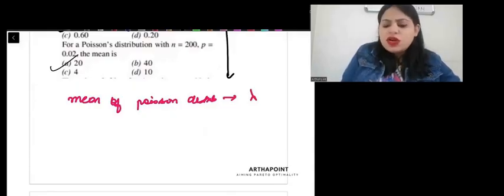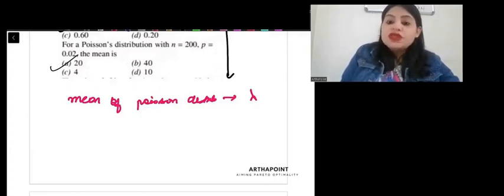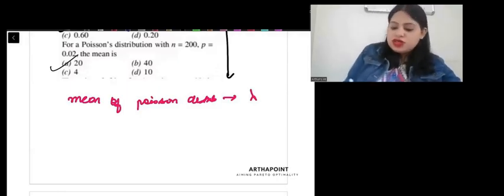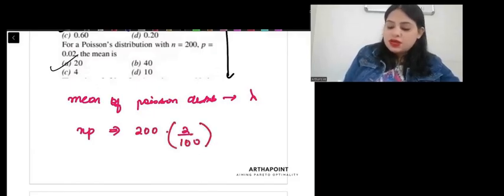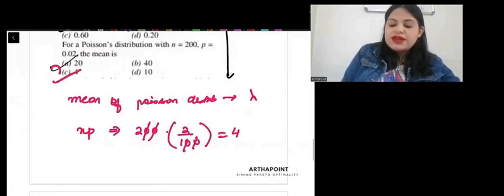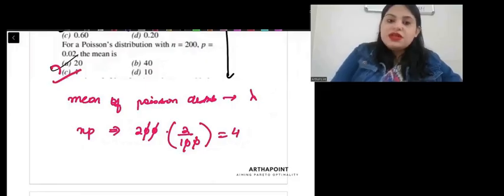But lambda is not given to us. Because lambda is not given to us, the only way in which I can find the mean of this Poisson distribution is by thinking that it is approximately close to a binomial distribution. So, the answer to this will be 4. So, that's the answer to this question that the mean of the Poisson distribution will be 4.